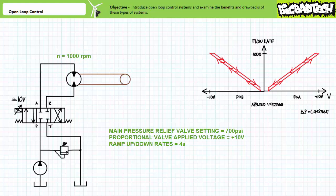When voltage to the proportional valve is linearly ramped from 0 to positive 10 volts over the course of four seconds, the spool progressively shifts to the full straight-through position. Flow rate to the hydraulic motor goes from 0 to maximum. The unloaded conveyor belt accelerates and stabilizes at 1600 RPM — a little too fast for our particular application. While the conveyor belt is running, the technician then dials down the voltage to the proportional valve until speed stabilizes at the desired 1000 RPM. Let's say this new voltage value is equal to positive 5.4 volts.